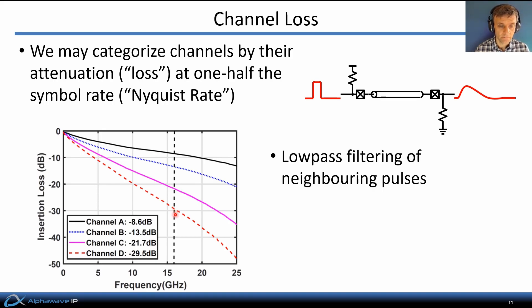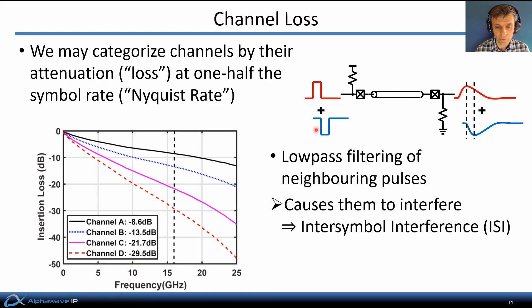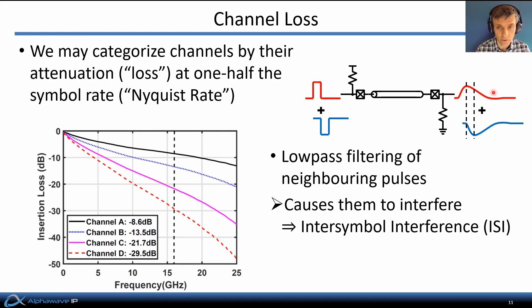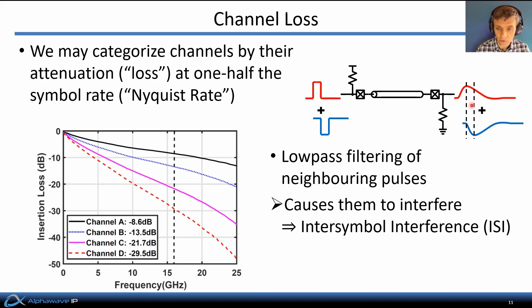Data communicated over such links can be thought of as a sequence of pulses neighboring in time. For example, a one bit may be communicated with a positive-going pulse, followed by a zero bit with a negative-going pulse. At high data rates these pulses are very narrow in time, allowing a lot of data to be packed over the link. The channel's low-pass filtering effects cause these narrow pulses to spread out in time and overlap with each other, making it hard for the receiver to distinguish whether a positive or negative-going pulse was transmitted.